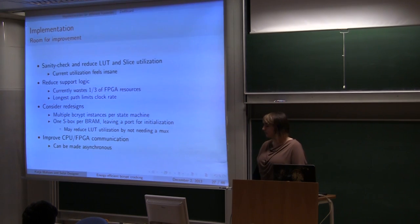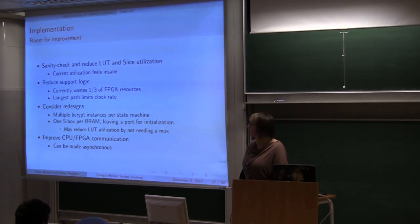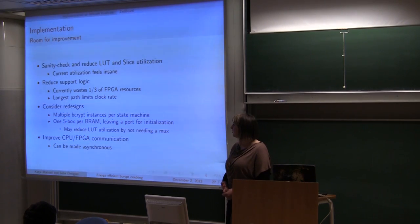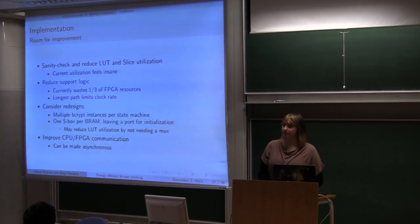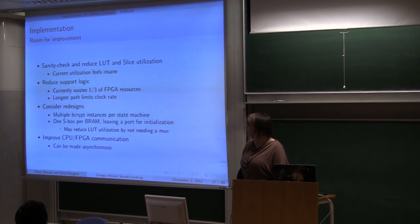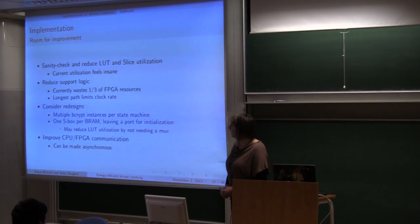There is a lot of room for improvement for this implementation. At the moment LUT initial utilization looks well insane. It's too high. We should be able to fit much more cores on the Z-board at the moment. There is problem with support logic. Support logic is DMA, three AXI buses. And all this initialization done to actually copy data into per instance S-boxes. So we also need to reduce that. Because one third of the board being consumed by that is too much.